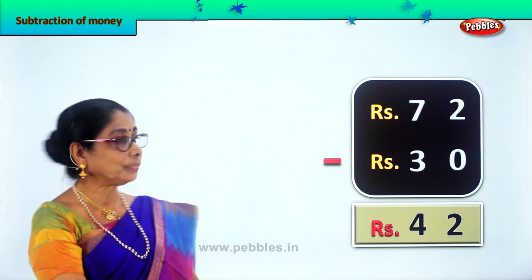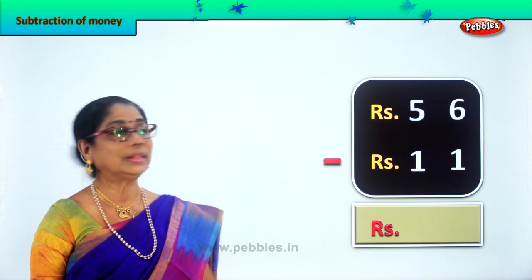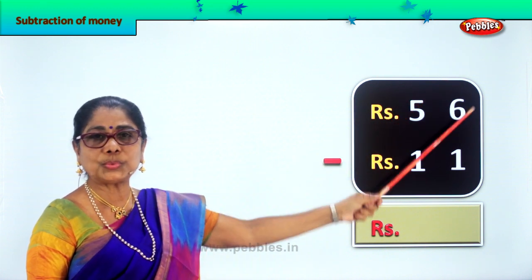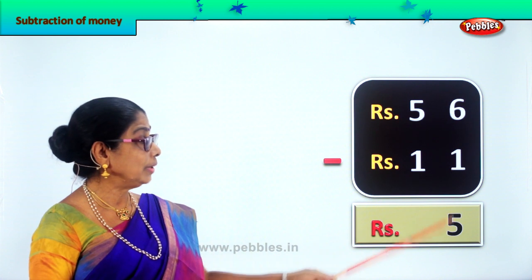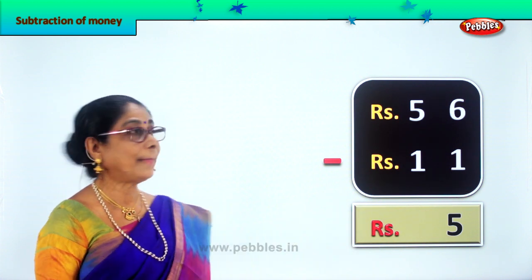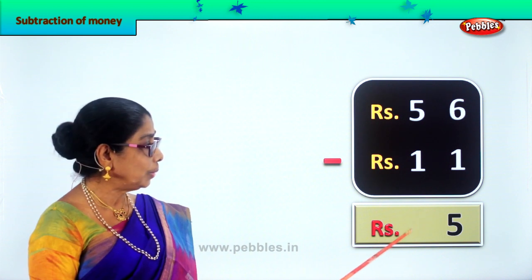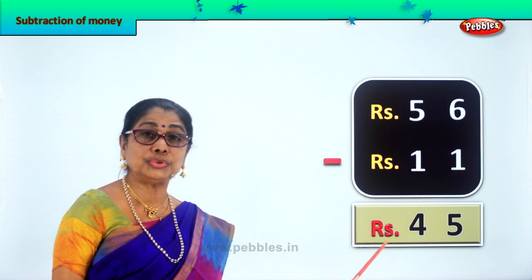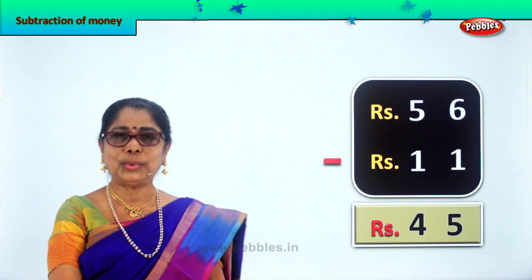Let's look at another sum. Rupees 56 minus rupees 11. We go to the ones place first — 6 take away 1 gives you 5. So we write 5 in the ones place. In the tens place you have 5 take away 1, which gives you 4. Rupees 56 minus rupees 11 gives you the answer rupees 45. Did you enjoy subtraction of money?